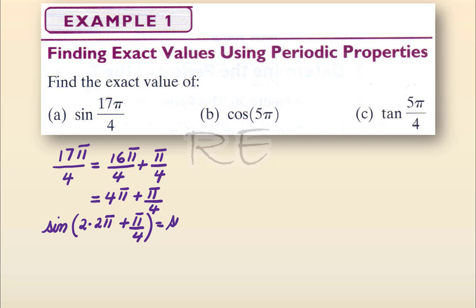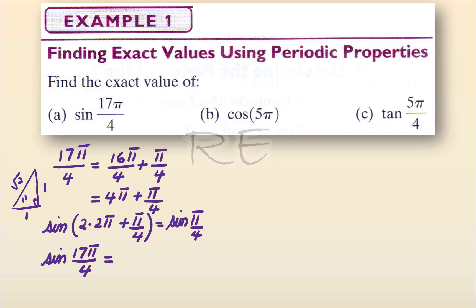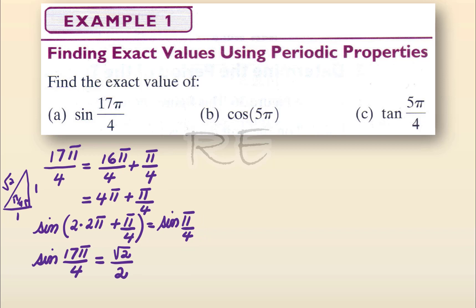So it's 2 full revolutions plus pi over 4, which means sine will be the same. Sine of 17 pi over 4 is the same as sine of pi over 4. Looking at the reference triangle, sine of pi over 4 is 1 over square root of 2, which when rationalized is square root of 2 over 2.